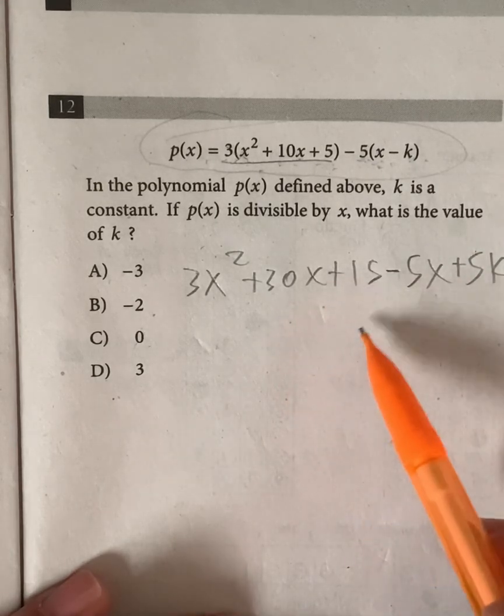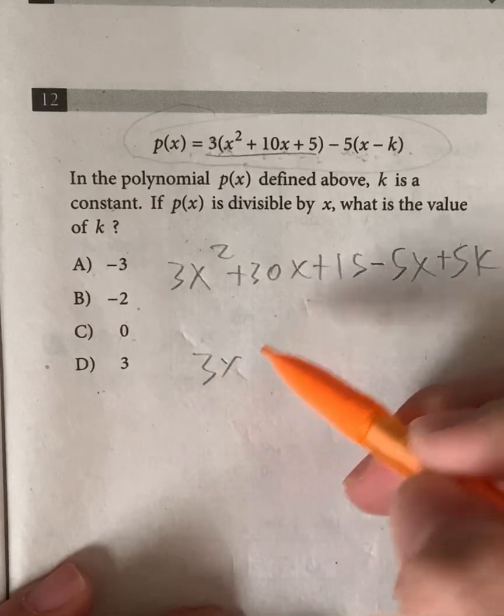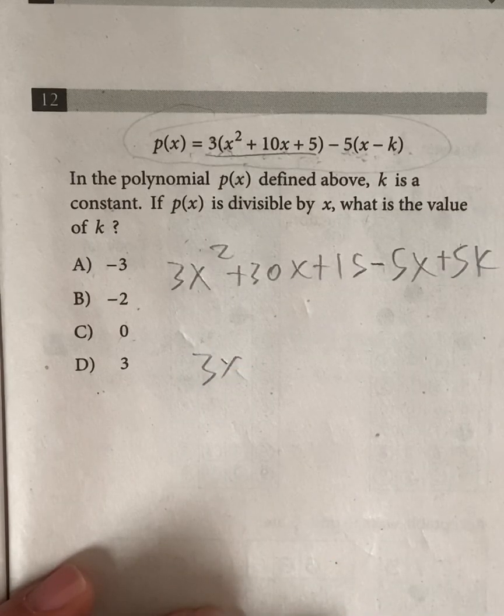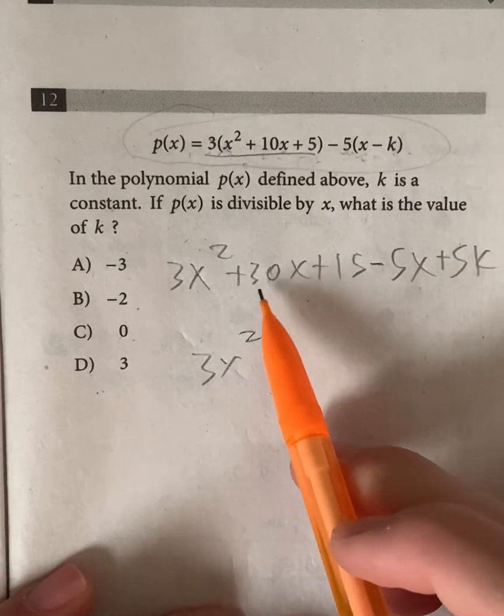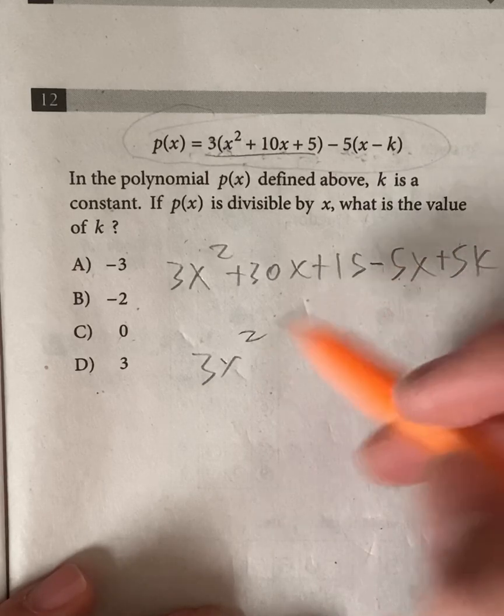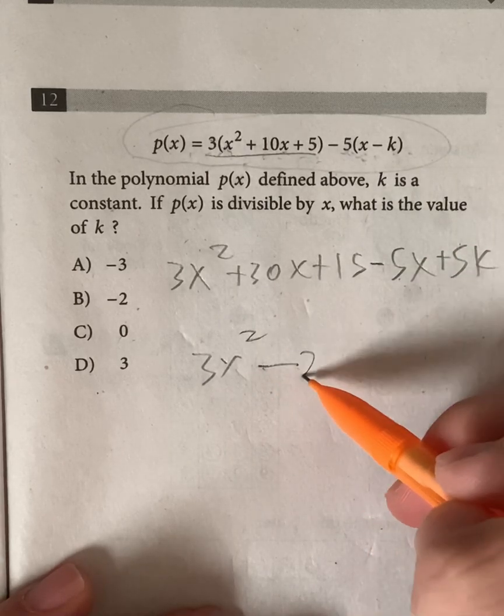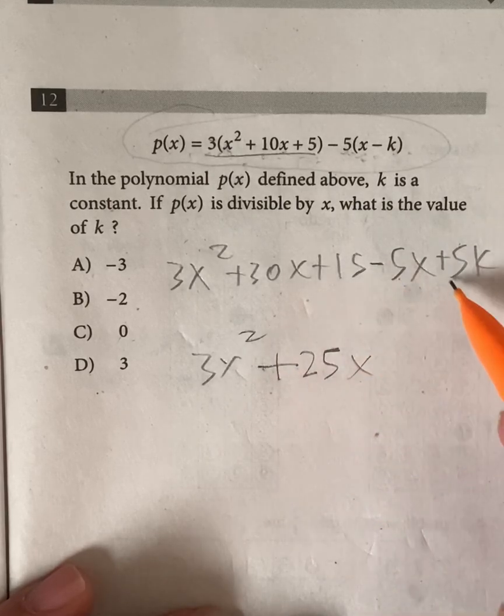Okay, so let's simplify this one right here. So we have 3x squared. Oh, my leg just broke. I'm writing too hard. Okay, so 3x squared. And then 30x minus 5x is going to give us positive 25x. And 15 plus 5k.